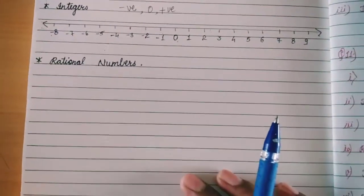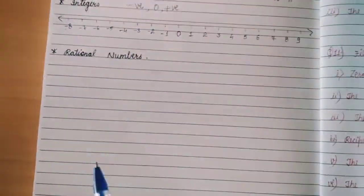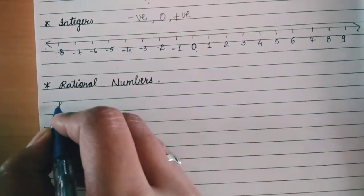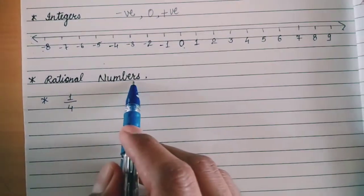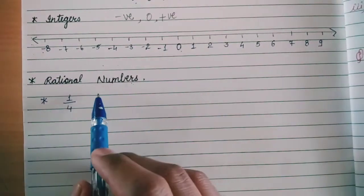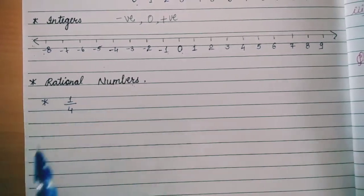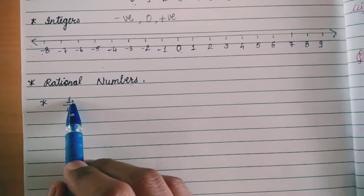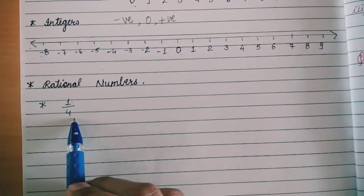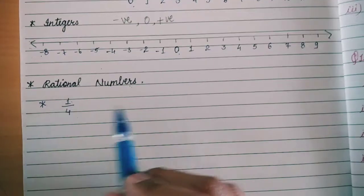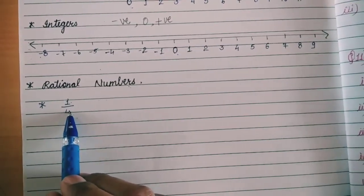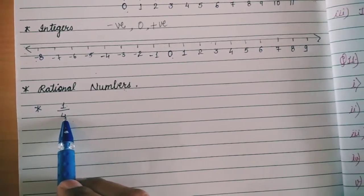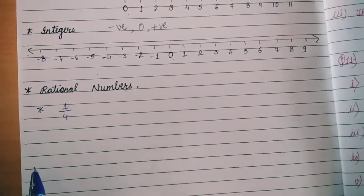Now the next topic is rational numbers. We will show rational numbers on the number line. Let us take one small example: 1 by 4. Is it a rational number? Rational numbers can be represented in the form of P upon Q, where P and Q are integers and Q is not equal to 0. Our 1 and 4 are integers, and the denominator is 4 which is not zero. So yes, 1 upon 4 is a rational number. Now we will draw a number line for this rational number.